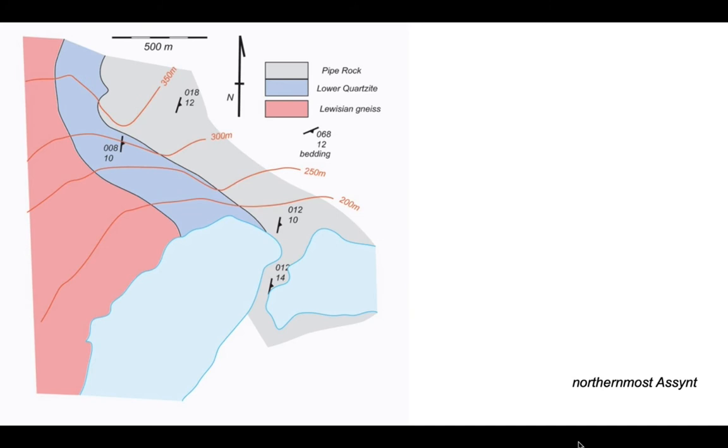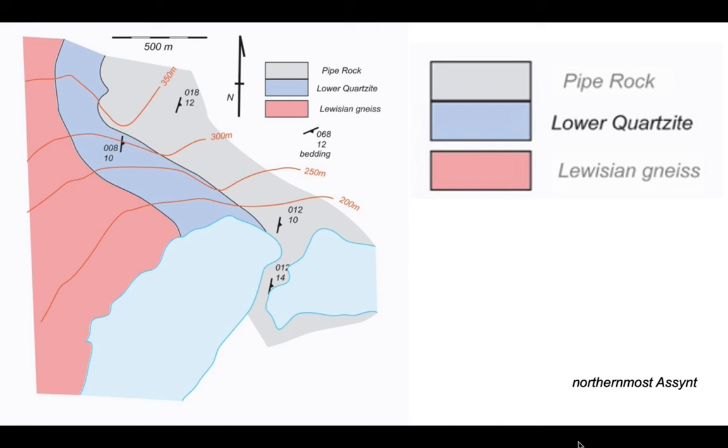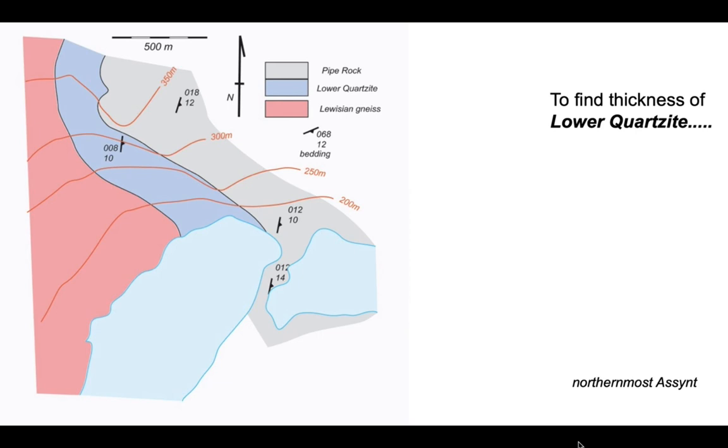We're going to use this map and we're interested in trying to obtain the thickness of the lower quartzite, which lies between the Lewisian gneiss underneath in the pink color and a grey unit on top, the pipe rock. So the lower quartzite forms the filling in a sandwich and it's over here on the map. Our mission is to find the thickness of this lower quartzite layer.